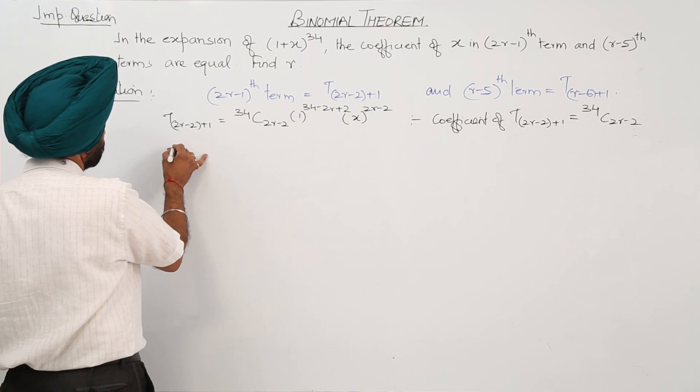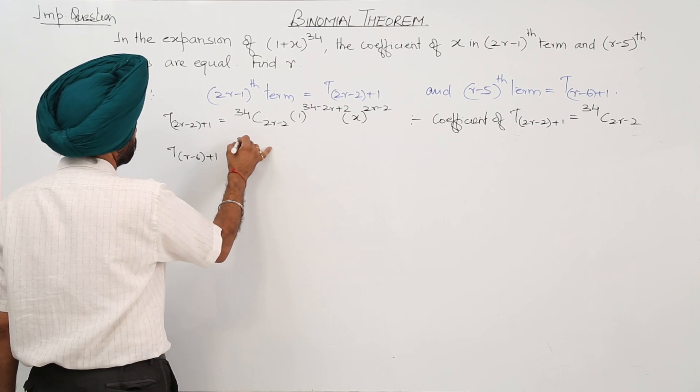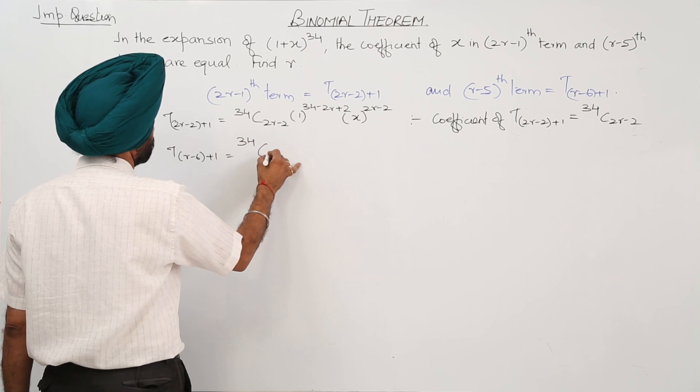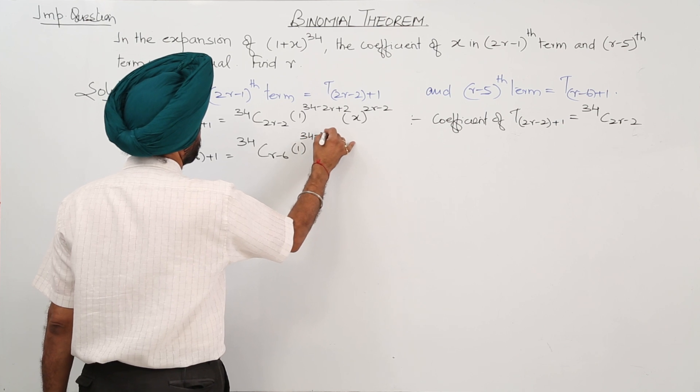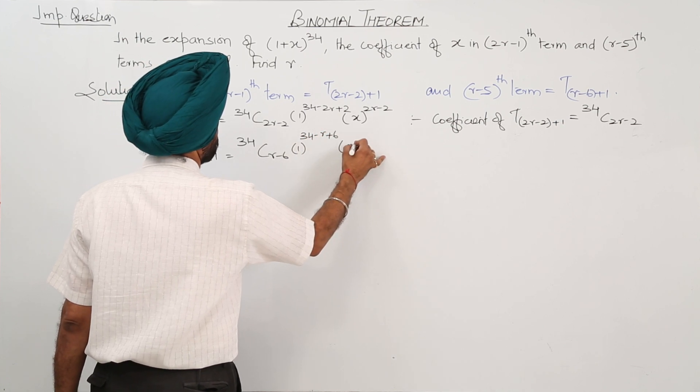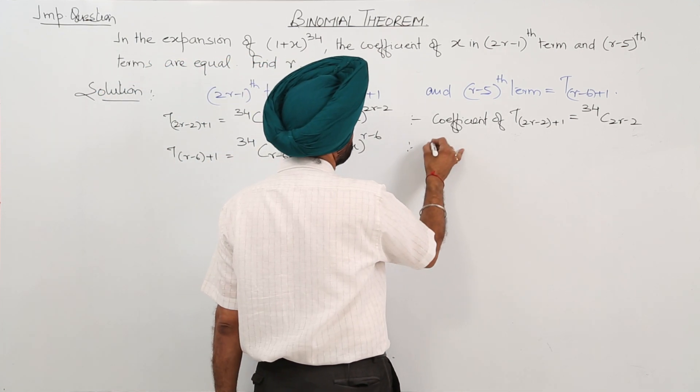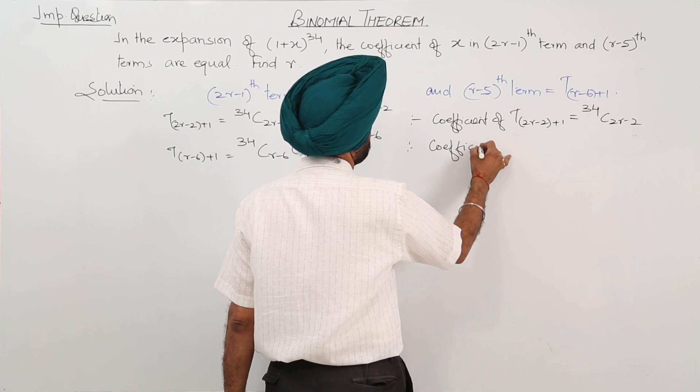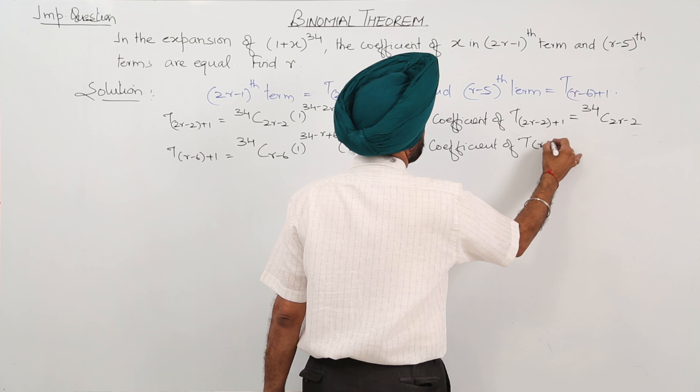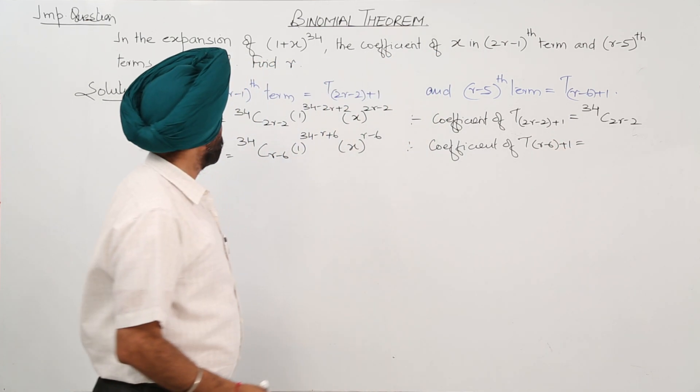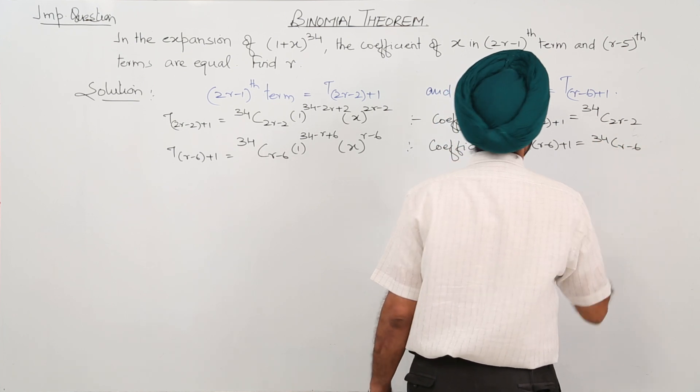T_{r-6+1} equals 34C_{r-6} times 1^{34-r+6} times x^{r-6}. The coefficient of T_{r-6+1} is equal to 34C_{r-6}.